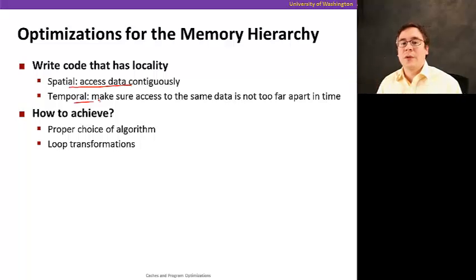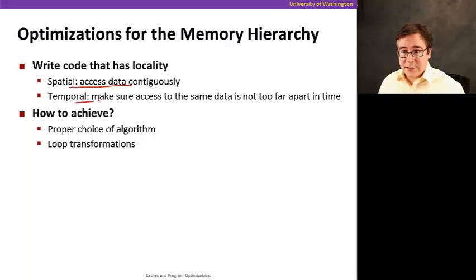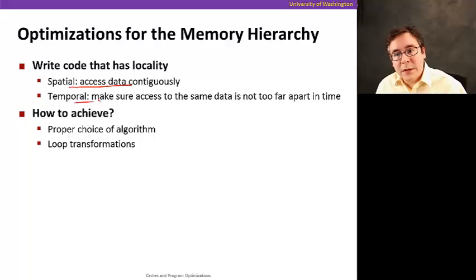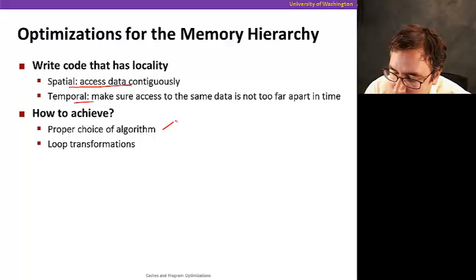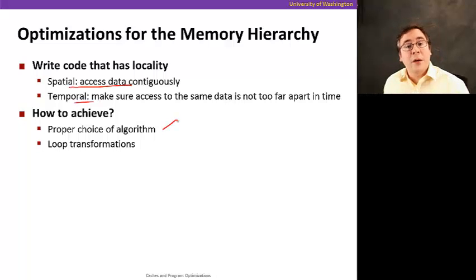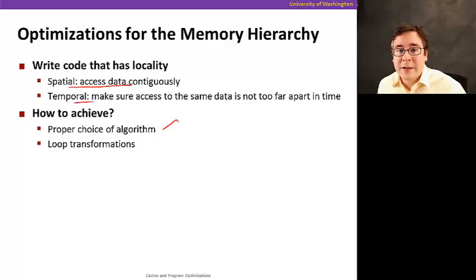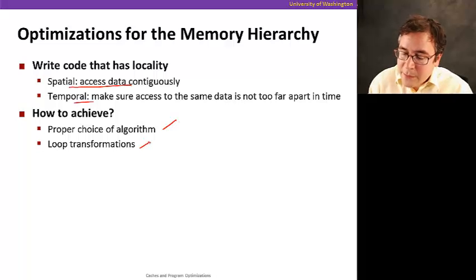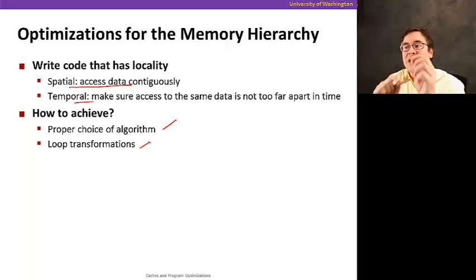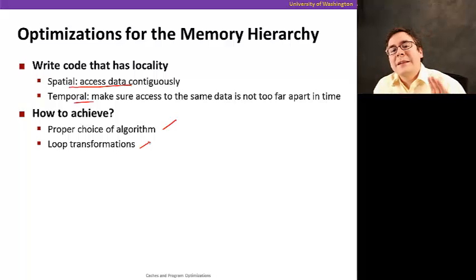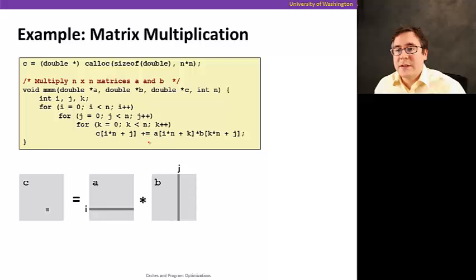By doing so, you can take advantage of temporal locality and increase the likelihood that the data is going to be in the cache. There are two basic ways of achieving that: one is a proper choice of algorithm, since the algorithm itself determines a lot of how data is laid out and the order of operations. The second is loop transformations — how we order loops when traversing data structures.